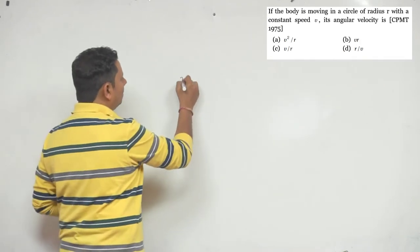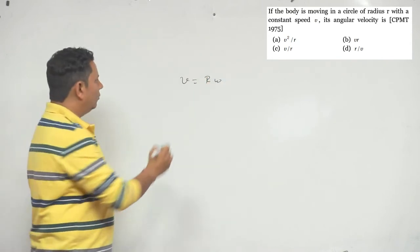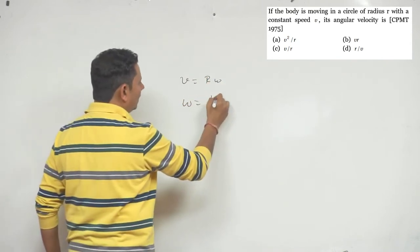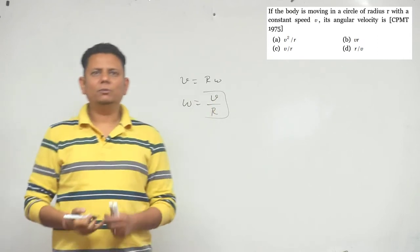then in that case we know v is equal to r omega. We can write, and then omega can also be written as v by r. So this is a very simple question, just a formula.